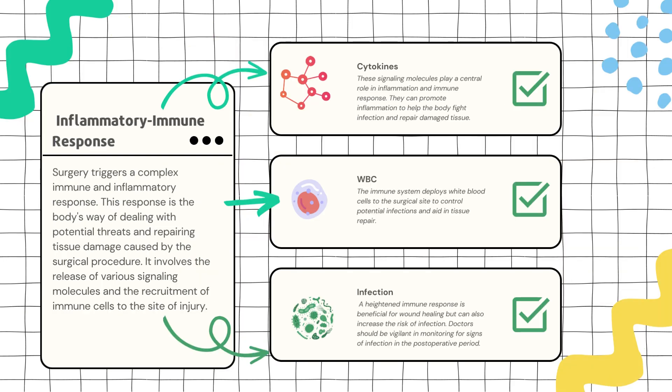The second aspect of the stress response involves the activation of the immune and inflammatory systems during surgery. Surgery triggers a complex immune and inflammatory response — the body's way of dealing with potential threats and repairing tissue damage caused by the surgical procedure. It involves the release of various signaling molecules and the recruitment of immune cells to the site of injury.